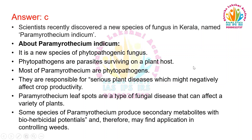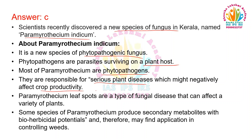Scientists recently discovered a new species of fungus in Kerala named Para Myrothosium indicum. It is a new species of phytopathogenic fungus. Phytopathogens are parasites surviving on plant hosts. Most Para Myrothosium are phytopathogens — they are responsible for serious plant diseases which might negatively affect crop productivity. Para Myrothosium leaf spots are a type of fungal disease that can affect a variety of plants. Some species of Para Myrothosium produce secondary metabolites with bioherbicidal potentials and may find applications in controlling weeds.